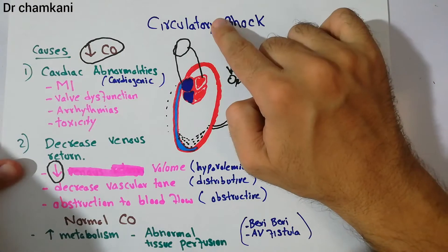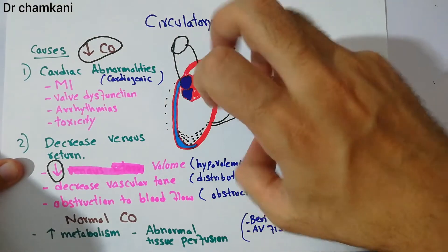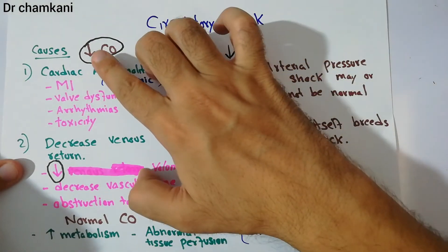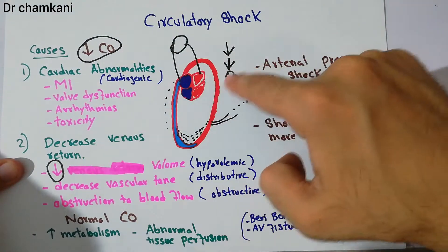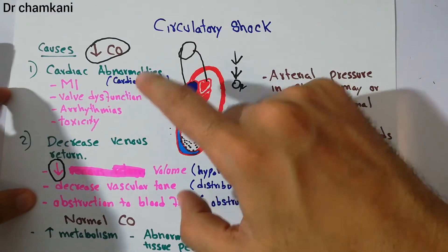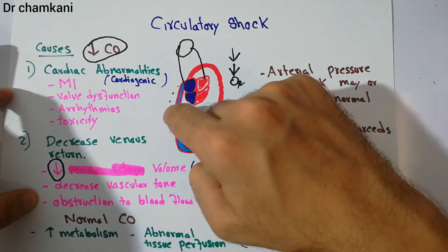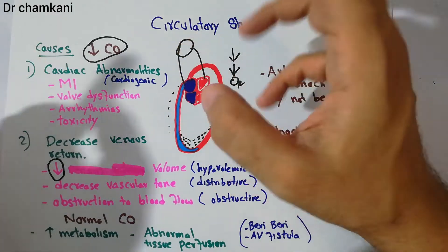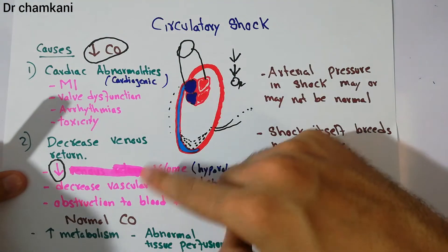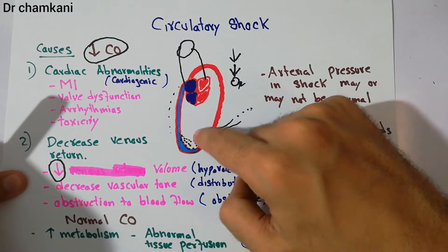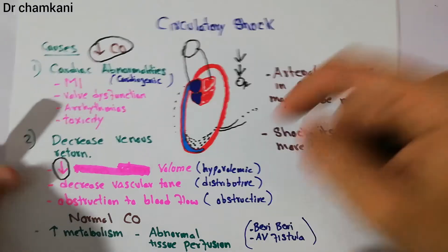Distributive shock is a circulatory shock due to decreased cardiac output, which in turn is due to decreased venous return caused by decreased vascular tone. The amount of blood pumped by the heart is not normal, but the decreased cardiac output is due to decreased venous return because the tone of the blood vessels is not normal.